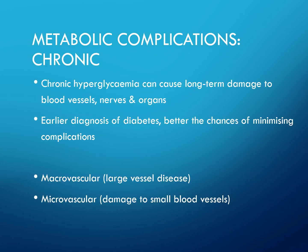Moving on to chronic metabolic complications: chronic hyperglycaemia can cause long-term damage to blood vessels, nerves, and organs. Earlier diagnosis of diabetes gives better chances of minimising complications. These come in two types: macrovascular — large vessel disease — and microvascular — damage to small blood vessels.